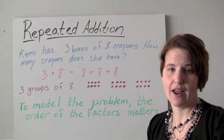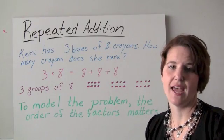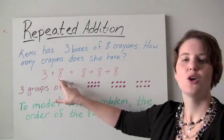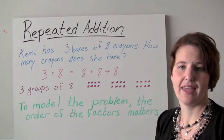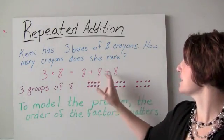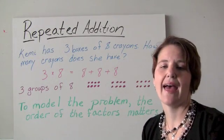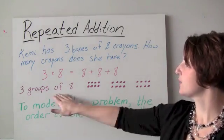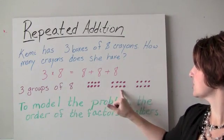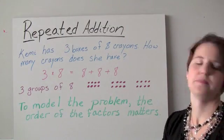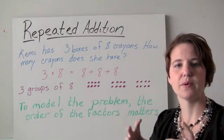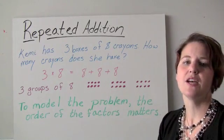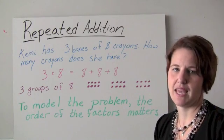Kemi has three boxes of eight crayons — how many crayons does she have? This is represented by the product of three times eight, or three groups of eight. So this is eight plus eight plus eight; it's repeated addition, adding eight to itself three times. Three groups of eight can be pictured with a discrete model — sets joined together.